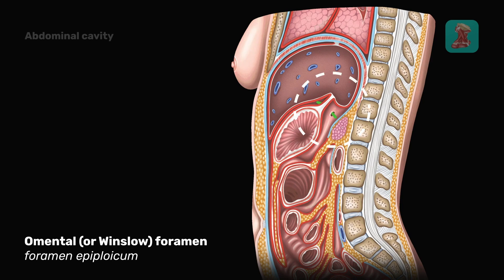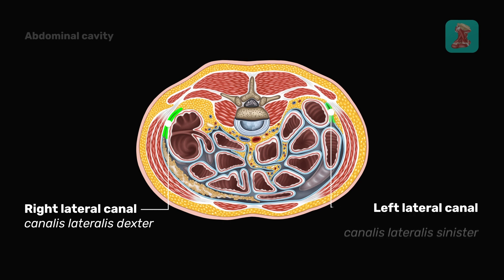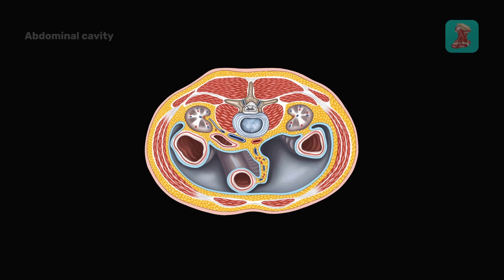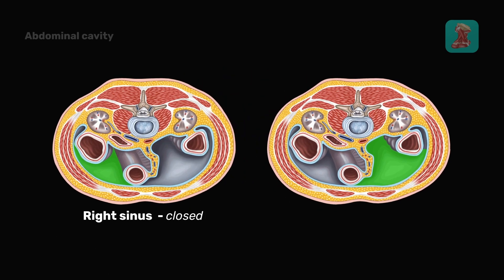The omental bursa communicates with the hepatic bursa by the omental, or Winslow, foramen. In the lower floor of the peritoneal cavity, there are two lateral canals and two mesenteric sinuses. The right lateral canal is located between the right wall of the abdomen and the ascending colon, and the left lateral canal is located between the left wall of the abdomen and the descending colon. The root of the mesentery of the small intestine divides the lower floor into the right mesenteric sinus and the left mesenteric sinus. The right sinus is closed, and the left one communicates with the pelvic cavity inferiorly.